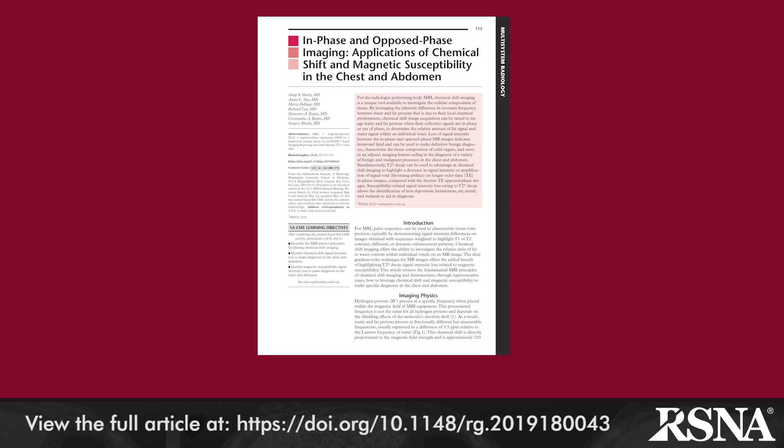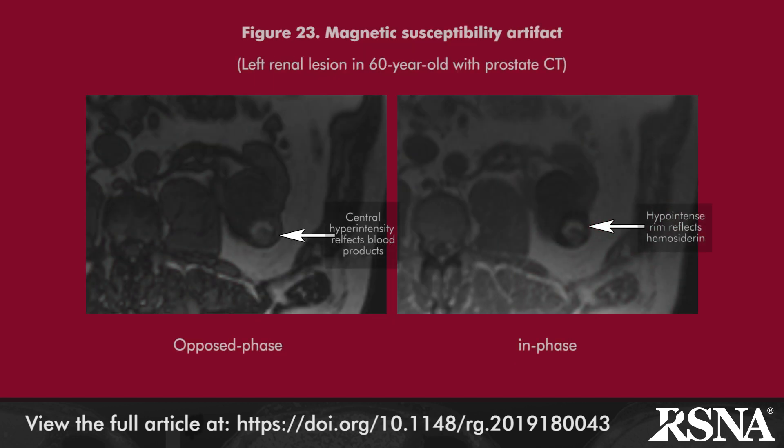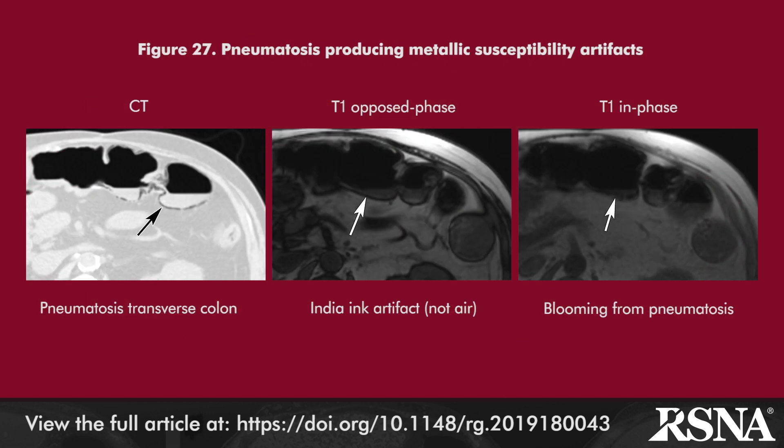Magnetic susceptibility applications of chemical shift MR imaging include the detection of ferritin and hemosiderin within chronic hematomas, seen on in-phase T1-weighted images as a rim of low signal intensity, and detecting hepatic iron deposition in hemochromatosis and hemosiderosis.